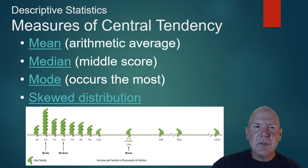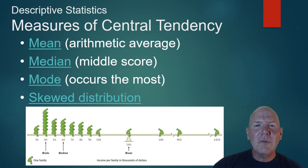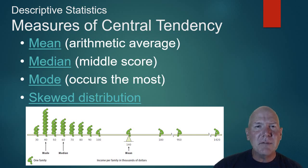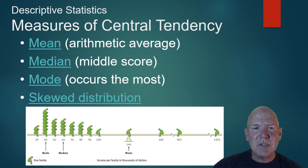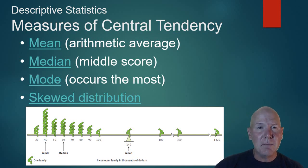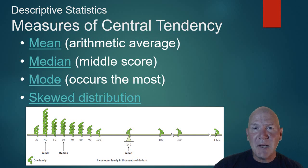One of the things we can look at when we look at results is central tendency — where it ends up. A lot of us think of this as averages. The arithmetic average is where we take all of the data points, add them together, and divide by the number of data points — we call that the mean. A median is the score that occurs right in the middle when scores are ordered smallest to largest. A mode is the most occurring number — the one that repeats the most.